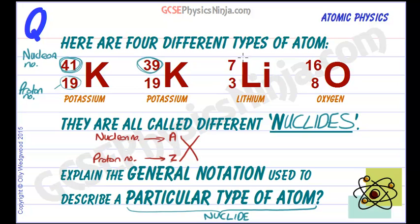So in this case, if we take lithium, we can see that A is equal to 7 and Z is equal to 3. So the nucleon number or mass number is 7, and the proton number Z is 3.